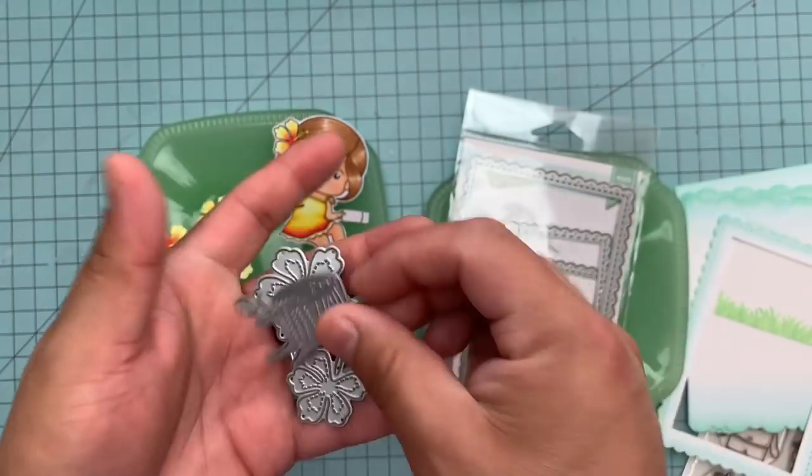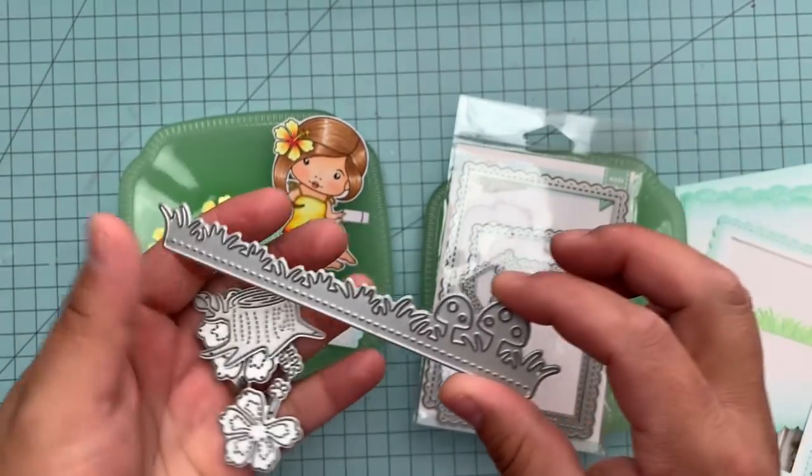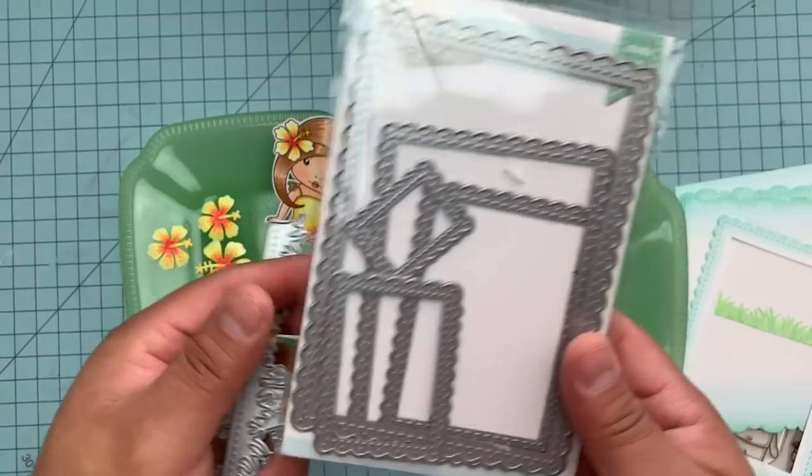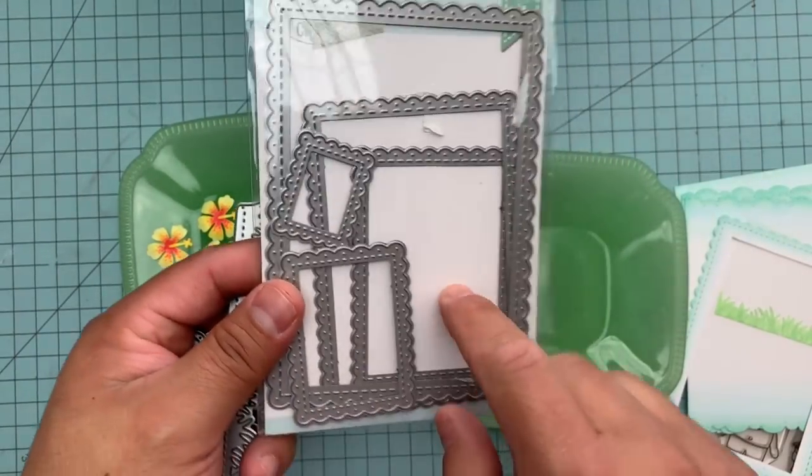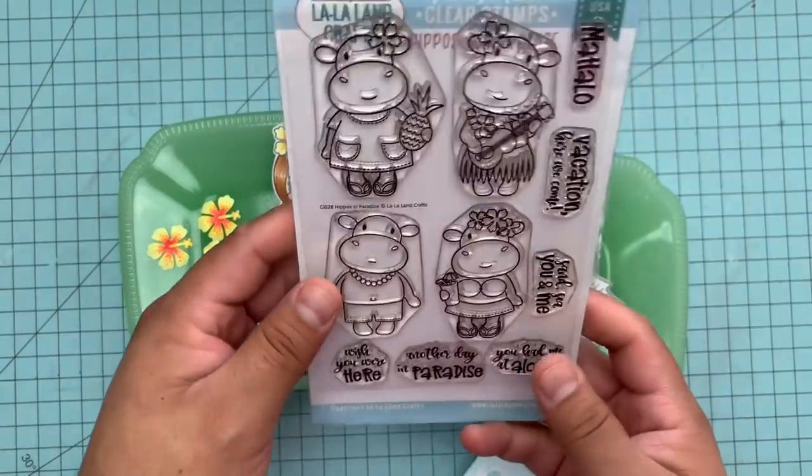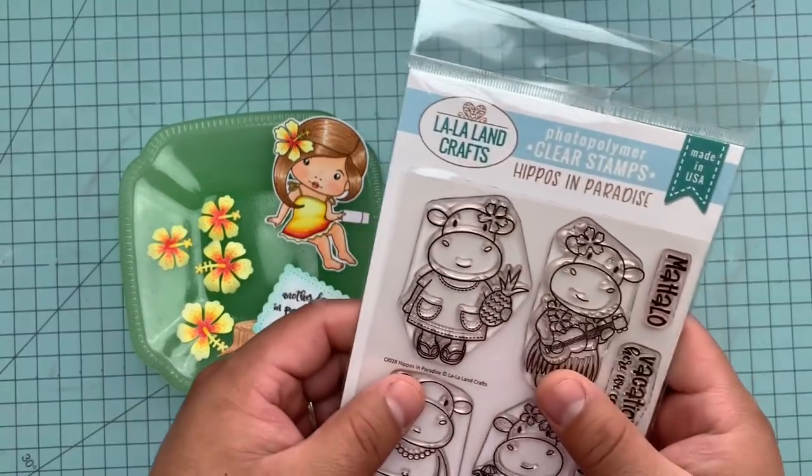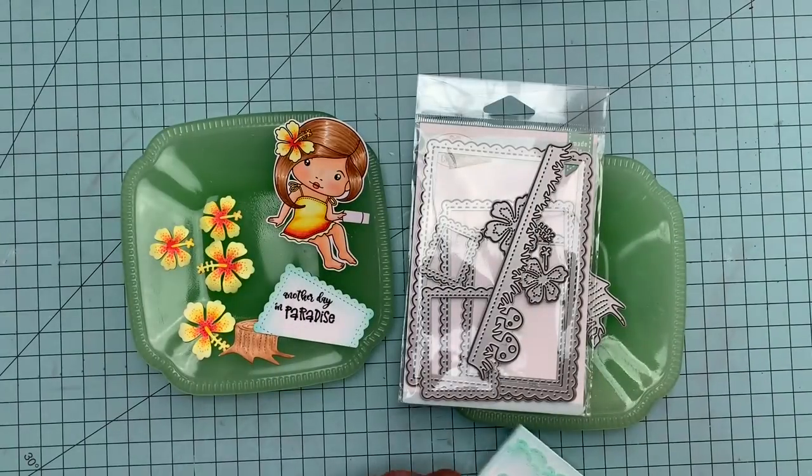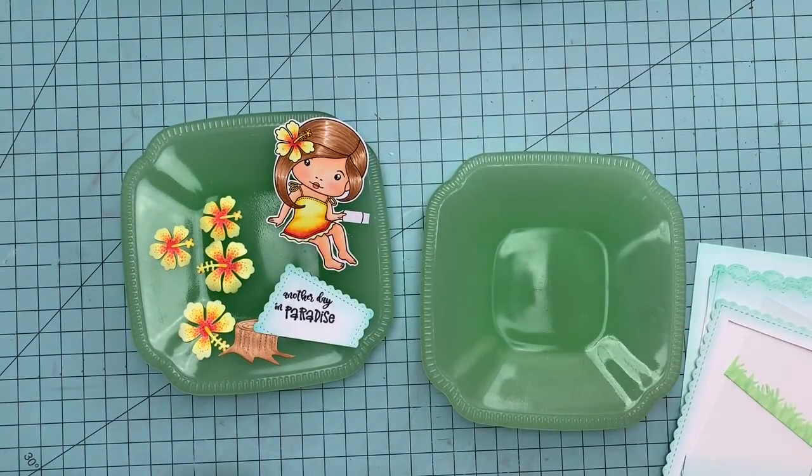This is a set of two - it's the tree stump and twig. This one is the grass and mushrooms border die. This one is the scalloped rectangles, the stitched scalloped rectangles. Also in the shops, for the sentiment I use this clear stamp - Another Day in Paradise from the Hippos in Paradise stamp set.